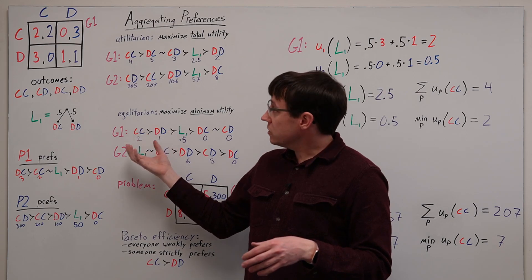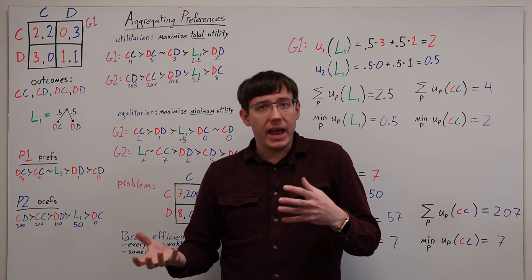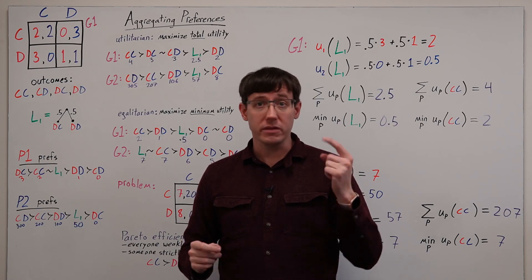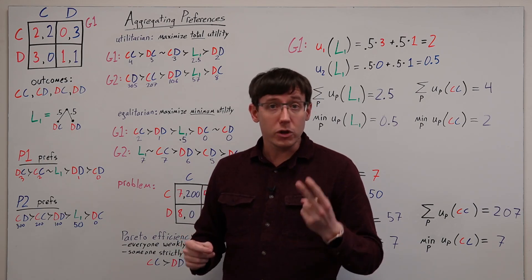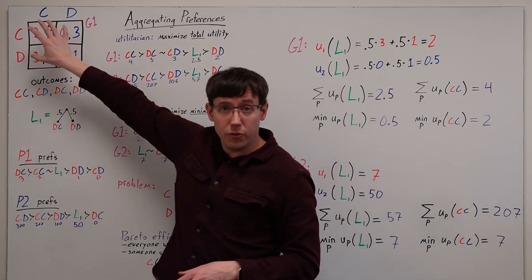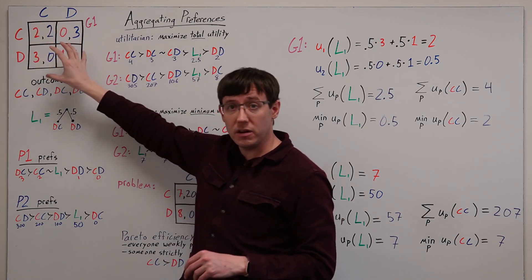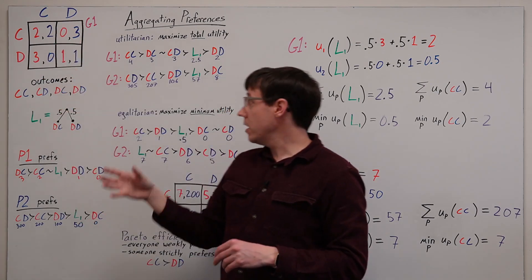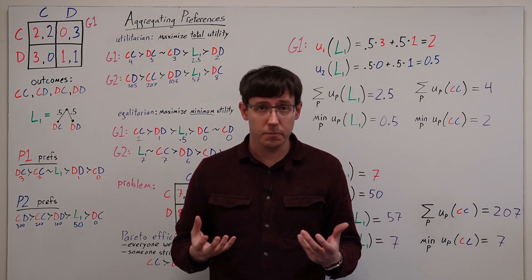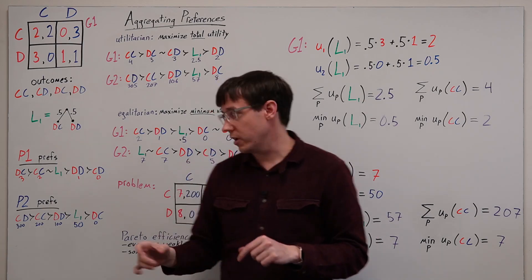So the overall message here is that if we're going to use some criterion for ranking outcomes that involves any sort of comparison between different players' utilities, we need to be very careful and have a very good reason why we think it's okay to do that. Maybe in the original formulation of the prisoner's dilemma, we think that we have captured the incentives well enough that it's okay to add up or take the minimum over the utilities of the different players.